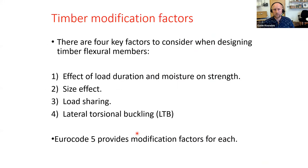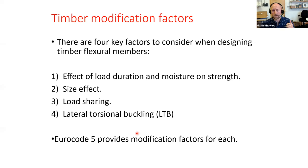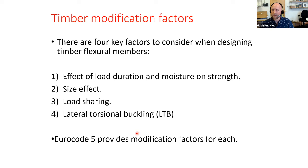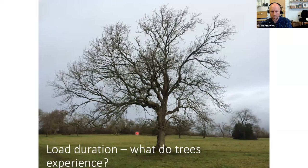The four key modification K-factors are: (1) K_mod — load duration and moisture effect on strength; (2) K_h — size effect factor; (3) K_sys — load sharing factor; and (4) K_crit — lateral torsional buckling factor. The Eurocode uses these modification factors against the characteristic bending strength.